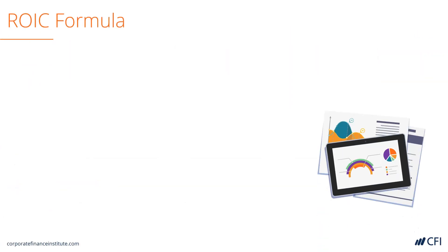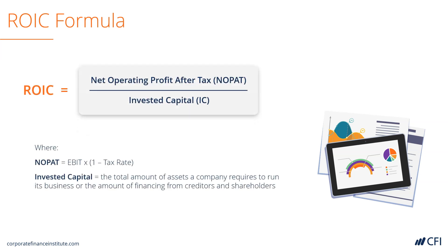The formula for return on invested capital is net operating profit after tax divided by invested capital. Net operating profit after tax is defined as EBIT times 1 minus the tax rate. Invested capital is defined as the total amount of assets a company requires to run its business, or the amount of financing from creditors and shareholders.